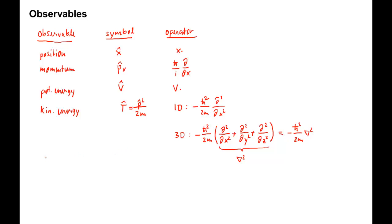The total energy operator is denoted by H and is called the Hamiltonian. It's equal to the sum of the kinetic energy plus the potential energy.